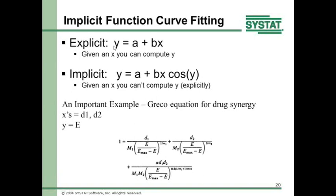Implicit function curve fitting: here's an explicit function — y equals a plus bx. Enter x equals 2, you get a y value. That's explicit. Implicitly, if y equals a plus bx times cosine(y), you have y on both sides of the equation. Put in an x value and you're stuck because y is still on both sides. Now there are algorithms in SignalPlot to handle this. An example is the Greco equation for drug synergy, where d1 and d2 are independent variables and the dependent variable e appears in multiple exponent terms with no way to isolate it on one side. SignalPlot can now fit that function to data.